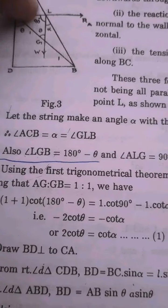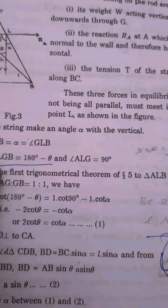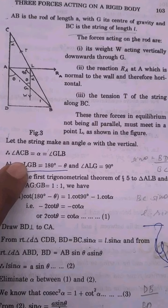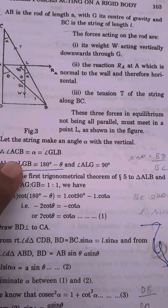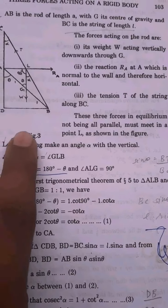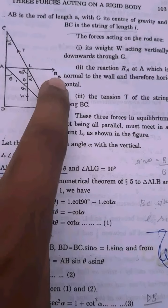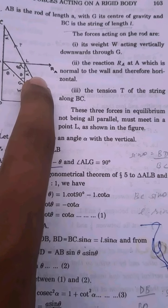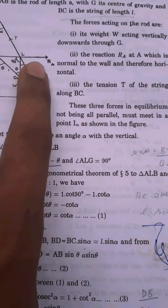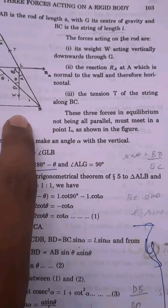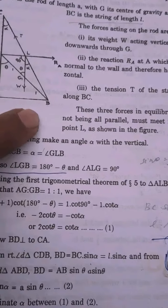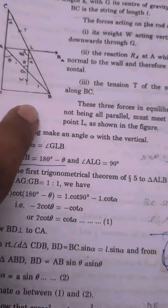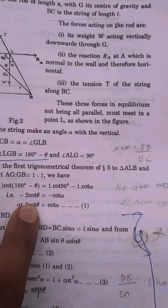Weight W acting vertically downwards. Two, the reaction R_A at A, which is normal to the wall and therefore horizontal. Three, the tension T of the string along BC. These are the three types of forces acting on the rod.